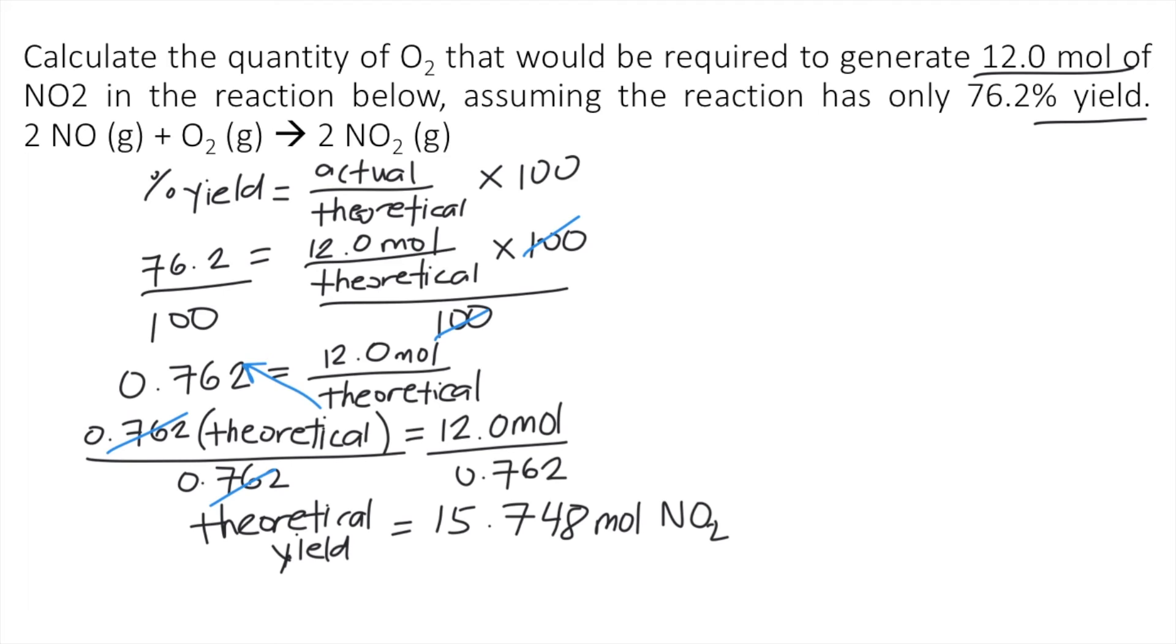it's asking for the quantity of O₂. So we have 15.748 moles of NO₂. So let's multiply that by the mole ratio between NO₂ and O₂.